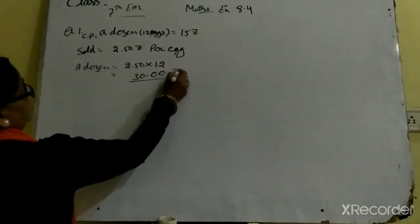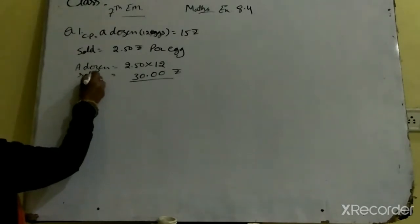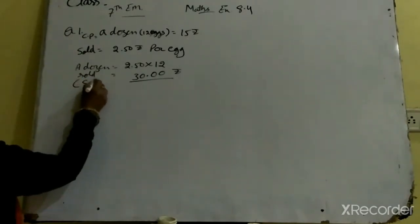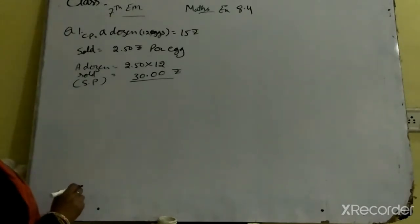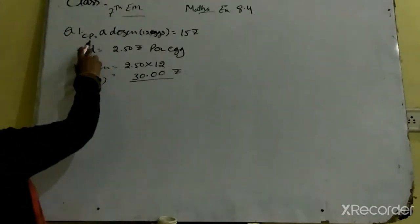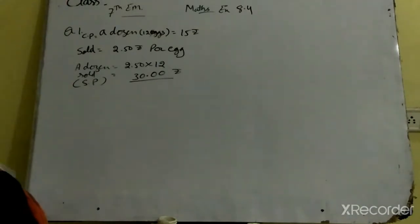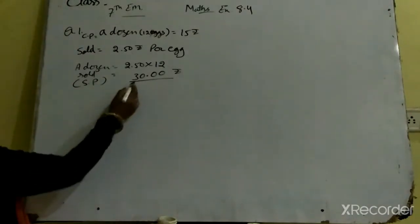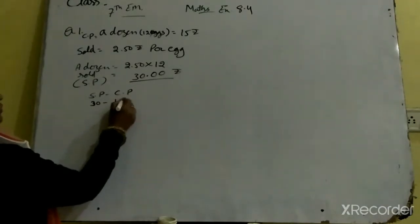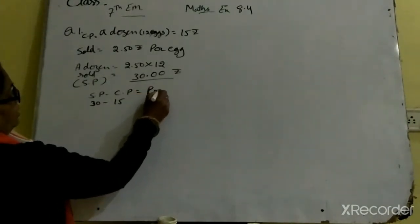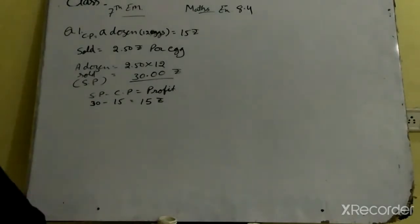2 digit aaghe point lagaya, to one dozen ki SP 30 rupees ho gayi. Yani selling price — jis price pe koi cheez bachi jaati hai — 30 rupees. Cost price — jis price pe kharidi — 15 rupees. SP jada hai, to SP minus CP: 30 minus 15 = 15 rupees ka profit ho gaya, yani gain ho gaya.